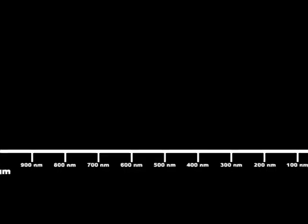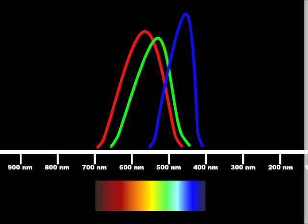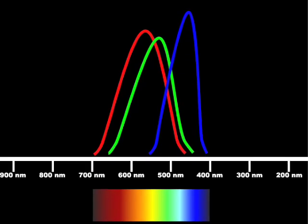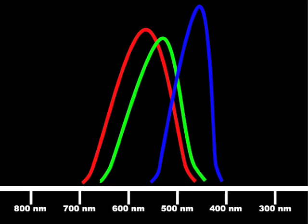But we're not actually sensitive to all the colors equally. We see green light a lot better because it also triggers a little bit of the red and the blue cones. And since cones are sensitive over a range of wavelengths, it's hard for us to know exactly what wavelengths we're looking at.